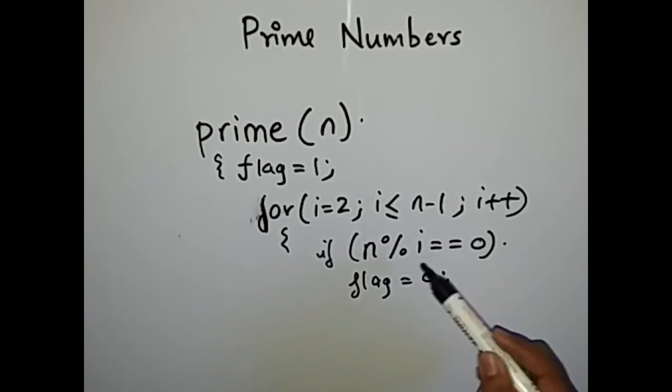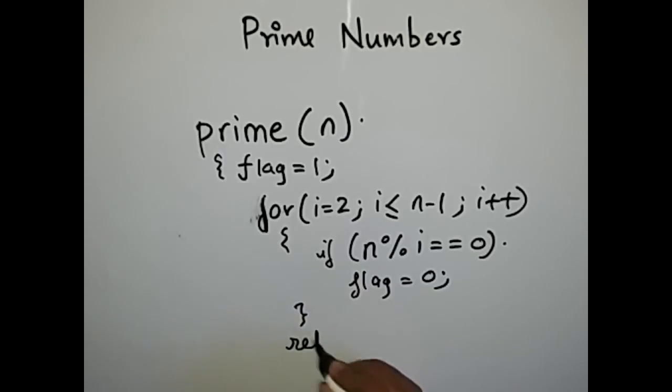Flag equal to 1 indicates that the number is prime and flag equal to 0 indicates that the number is not prime. As it gets divided by i, therefore this is the logic, and at the end we return flag. So in the main function we will check whether the value of this flag is equal to 1 or 0. If it is 1 then we will consider this number as prime, and if it is 0 then we will consider this number as not a prime number.